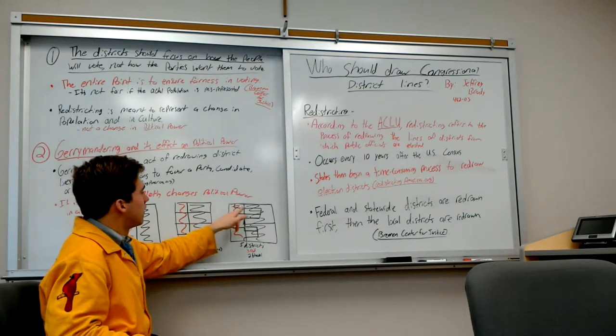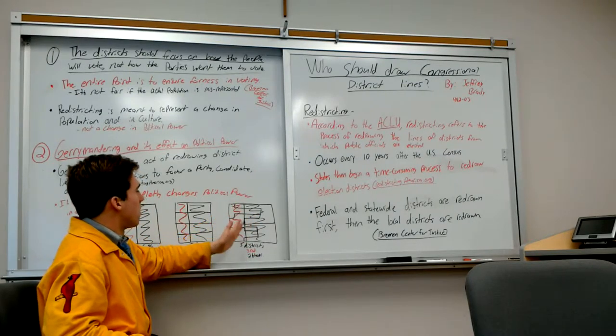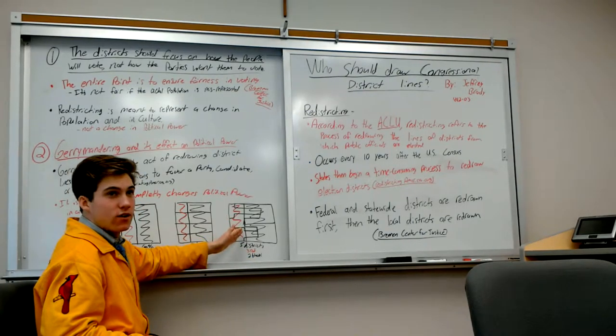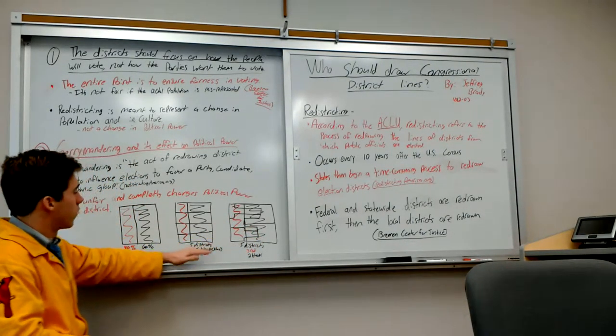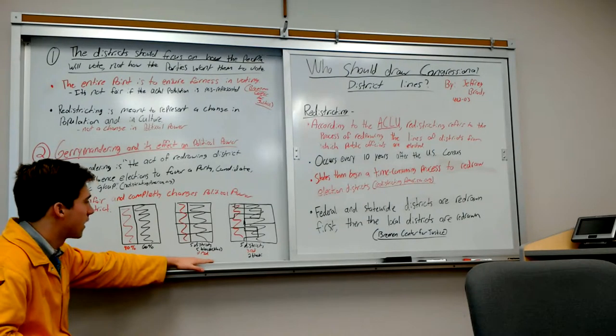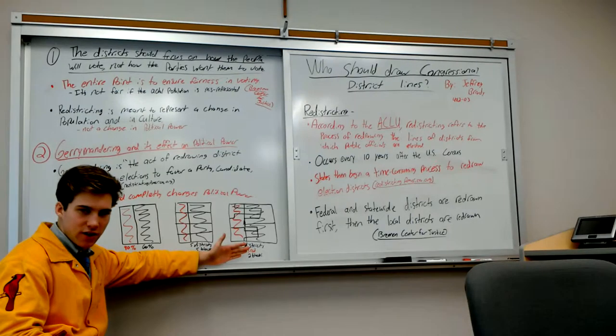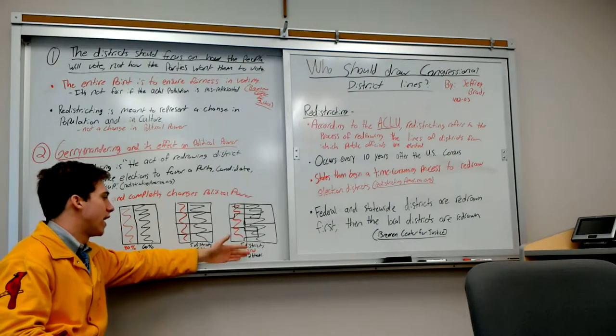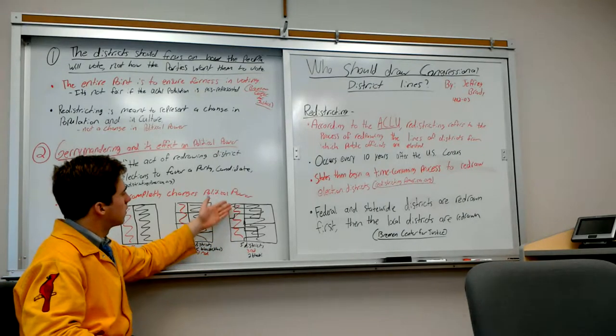Now over here is what gerrymandering would be. See here, we have all 5 of these districts being black. Now with the gerrymandering, they draw different lines as you can see here, so that the majority of each district now becomes red instead of black. So now we have 3 districts that are majority red and only 2 that are black, where here all 5 are majority black.